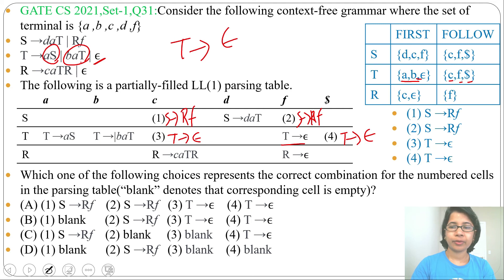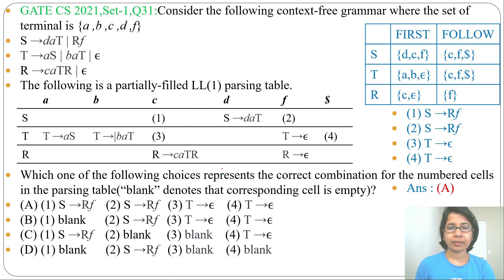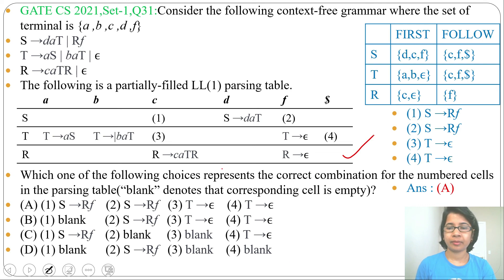The correct combination is: one = S → Rf, two = S → Rf, three = T → epsilon, four = T → epsilon. So the answer is option A. If you know how to find FIRST and FOLLOW and how to construct the LL(1) parsing table, you can easily solve this question. This topic was covered in the compiler design lecture — go through that lecture to practice further. If this lecture was helpful, please like and subscribe.